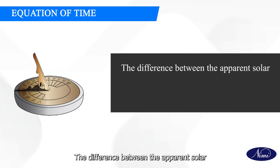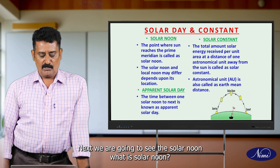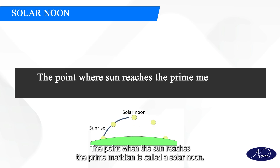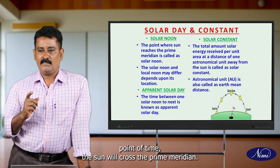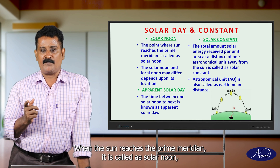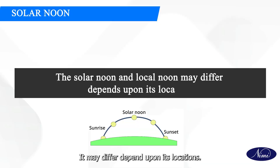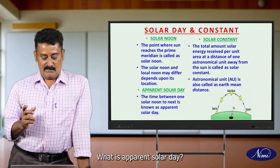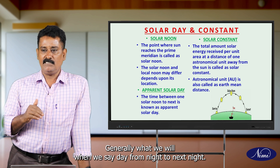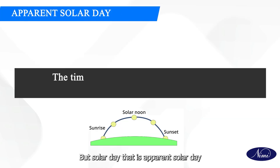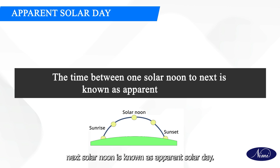Next, we are going to see solar noon. What is solar noon? The point when the sun reaches the prime meridian is called solar noon. When the earth is rotating, at one point in time the sun will cross the prime meridian — when the sun reaches the prime meridian, it is called solar noon. But solar noon and local noon may not be the same; it may differ depending on location. Next is apparent solar day. The time between one solar noon to the next solar noon is known as the apparent solar day.